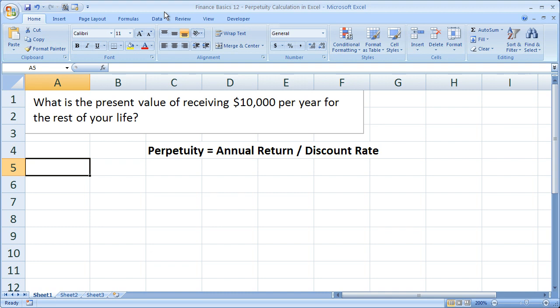So a perpetuity is basically a never-ending cash flow. It's something that you're looking out into the future and there isn't really an end to it. There's no horizon for it.